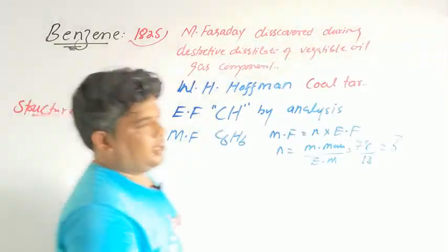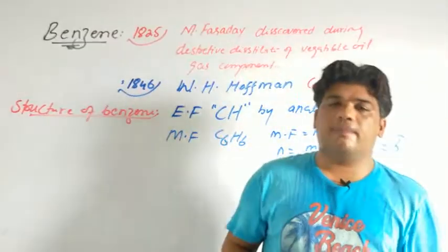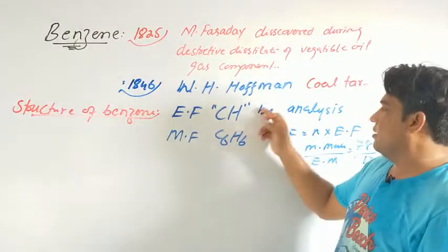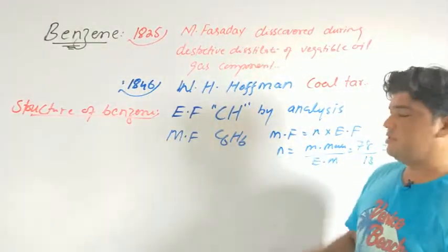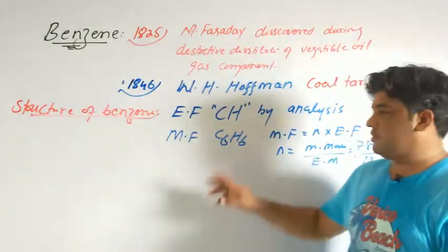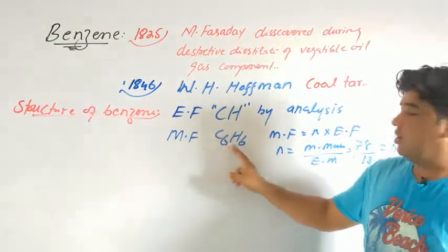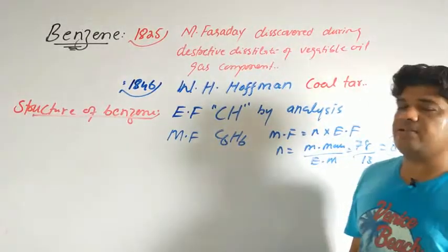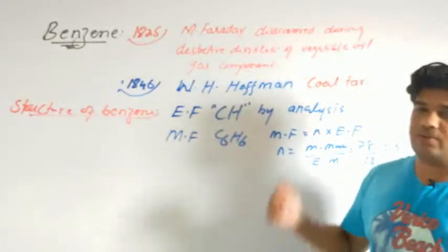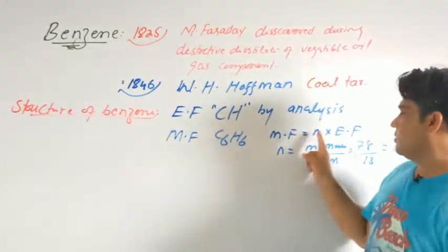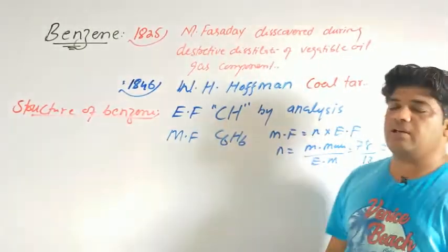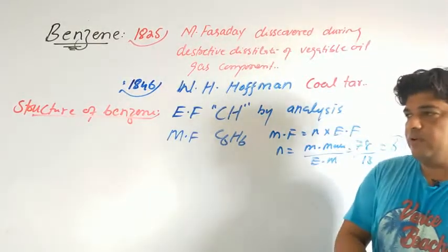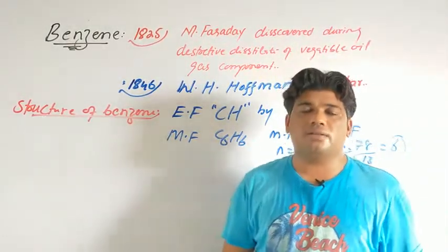So first by analysis, the empirical formula of benzene was found to be CH. Then from this empirical formula, the molecular formula C6H6 was derived. This means benzene has 6 carbons and 6 hydrogens. Its molecular mass is 78 and empirical formula mass is 13, giving N = 6. Multiplying 6 by the empirical formula gives molecular formula C6H6.